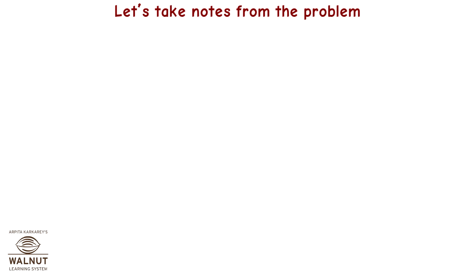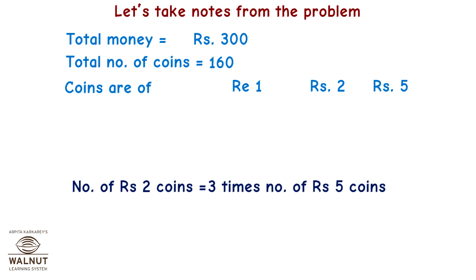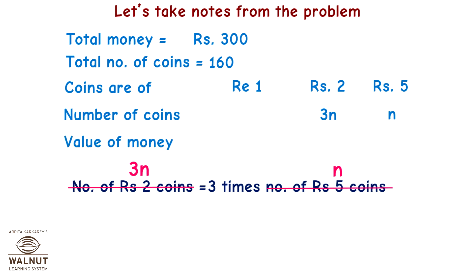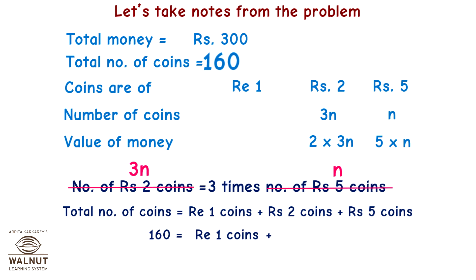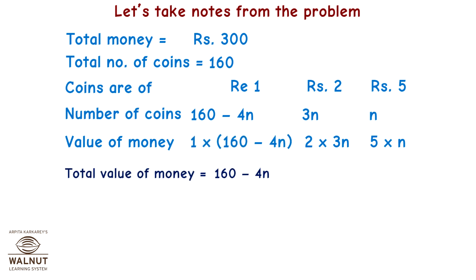Let's take notes from the problem. We find the relation between the money given and the number of coins of different denominations. There are 160 coins total, and the Rs 2 coins are 3 times the Rs 5 coins. So we take Rs 5 coins as n, hence Rs 2 coins are 3n. The value of Rs 5 coins is 5n and the value of Rs 2 coins is 2 into 3n, i.e., 6n. The Rs 1 coins number 160 minus 4n, with the same value. Now we have individual amounts for each denomination and the total amount.